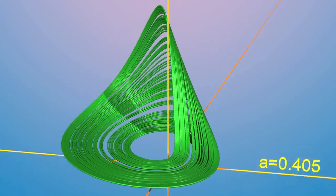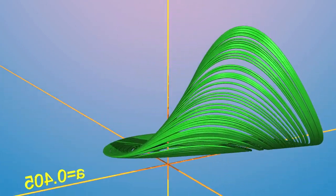For A equal to 0.405, the attractor is complicated and chaotic.